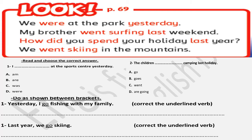Read and choose the correct answer. Number one: 'I ___ at the sports center yesterday.' Options: am, are, was, were. Since the last word is 'yesterday,' choose between 'was' or 'were.' It says 'I,' so the answer is 'I was.' Number two: 'The children ___ camping last holiday.' Children is plural — more than one. Last holiday is past. So we choose 'went.' Very good.